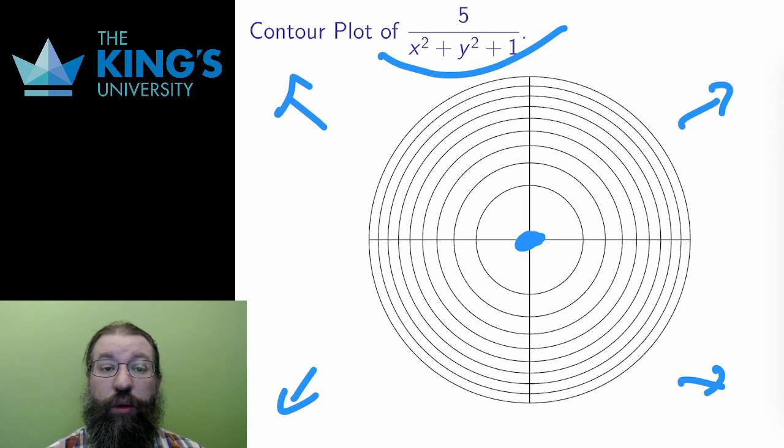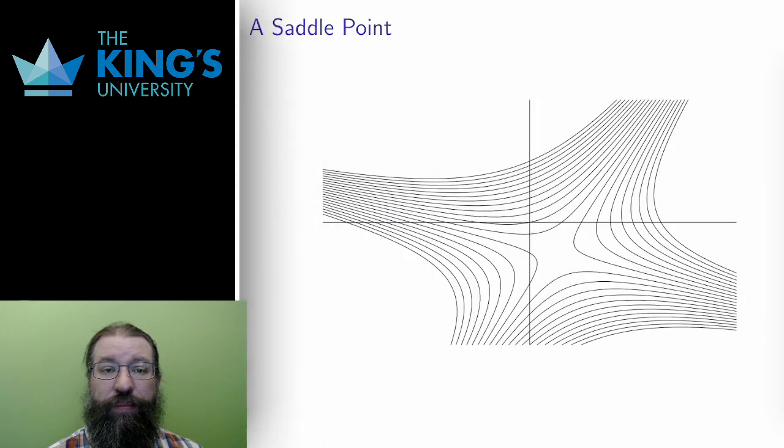Contour plots are a pretty useful tool to get a sense of the behavior of a two variable scalar field. Anyone familiar with reading topographical maps, of course, should find this pretty convenient. To show how I can read information out of a contour plot, consider this diagram.